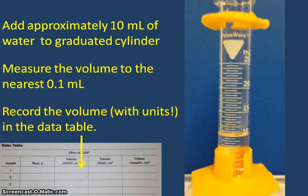You will then find the volume of each of the five samples next. To do this, start by adding approximately 10 mL of water to the graduated cylinder. You will measure the volume of the water to the nearest tenth of a mL and then record that volume with units in the data table in the spot indicated.